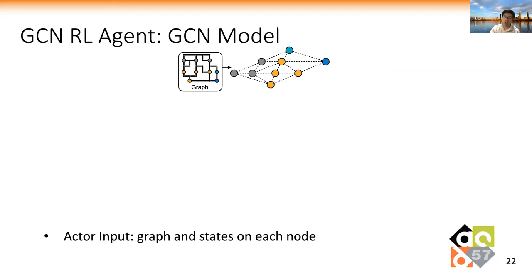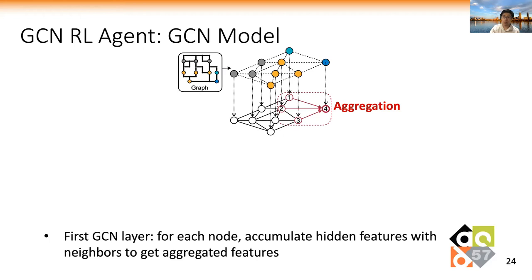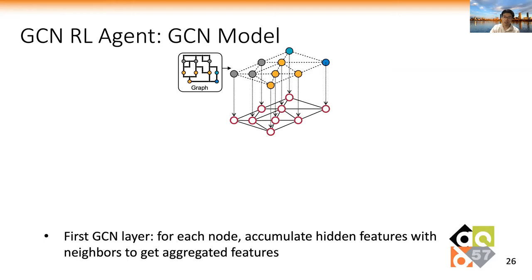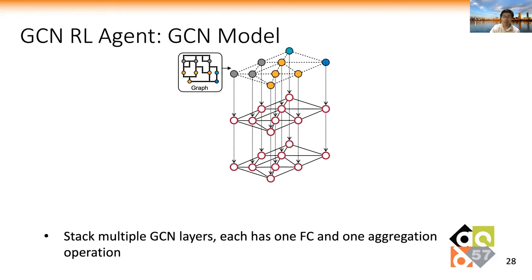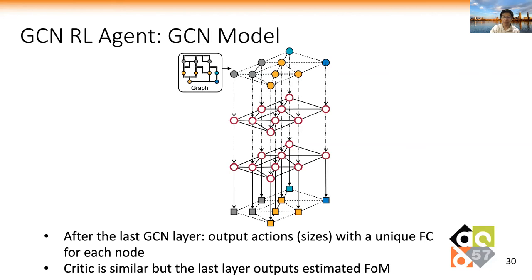Here we show the architecture for the actor GCN network. The actor takes the graph and state vectors on each node as inputs. In the first GCN layer, we multiply the input features with the same weight matrix for each node and get hidden features. Then we accumulate hidden features of a node with its neighbors to generate the aggregated features. This process is performed simultaneously on all nodes. Multiple GCN layers are stacked together, each with one fully-connected layer and one aggregation operation. After several GCN layers, each node can have a large receptive field. After the last GCN layer, we apply a unique FC layer for each node and output the sizes for the corresponding circuit component. The critic model is similar to the actor model, but its last layer outputs the estimated value.